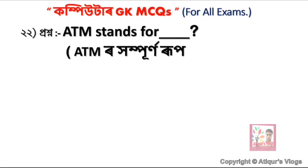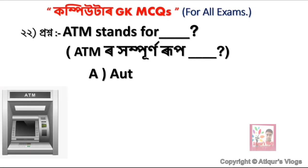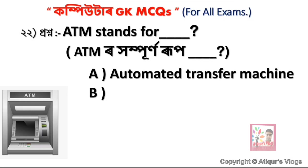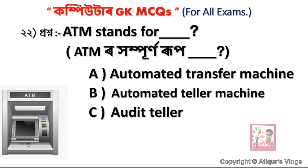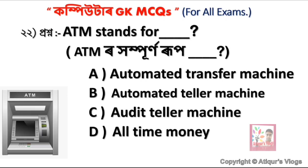ATM stands for — option A is Automated Transfer Machine, option B is Automated Teller Machine, option C is Audit Teller Machine, and option D is All Time Money. The correct answer is option B — Automated Teller Machine.